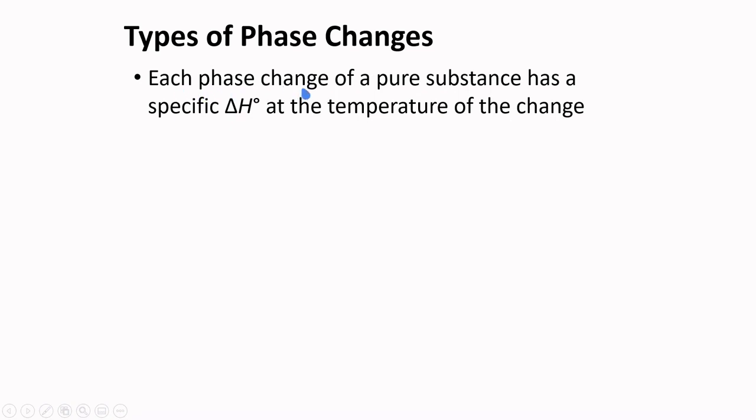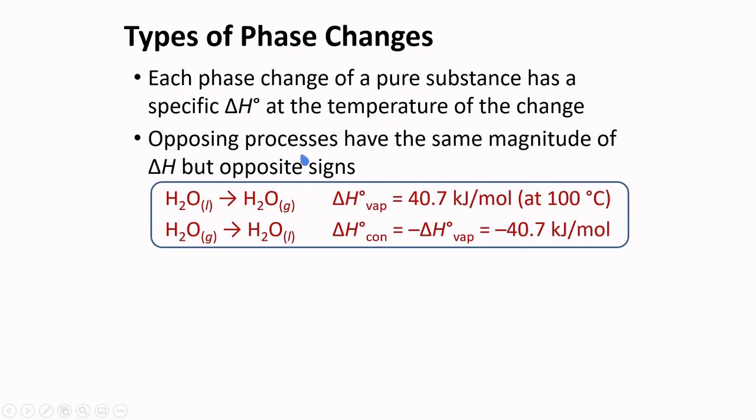Each phase change of a pure substance has a specific enthalpy change at the temperature of the change. Opposing processes have the same magnitude of enthalpy change, but opposite signs. Consider the conversion of liquid water to water vapor. The heat of vaporization is about 40.7 kJ per mole at 100 degrees Celsius. If the reverse process occurs, that is, water vapor is converted to liquid, the heat of condensation is just the opposite sign of the heat of vaporization, negative 40.7 kJ per mole.